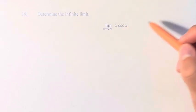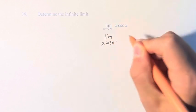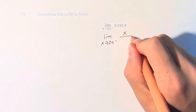So first, we have to note that cosecant is just 1 over sine. So this is the limit of x over sine of x.